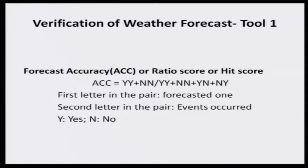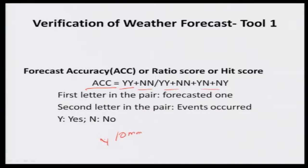This is a very simple tool. The forecast accuracy is indicated by ACC. Here I have given a pair of alphabets. The first letter in the pair is the forecasted value — rainfall is 10 millimeters — and the second letter is the event occurred. Suppose 10 mm: Y (yes). N means no. Y equals yes — that is, predicted 10 millimeters, event occurred 10 millimeters. Predicted no, event no. Different permutation combinations occur. This equation or tool can be utilized to find out the accuracy of the weather forecast being given.